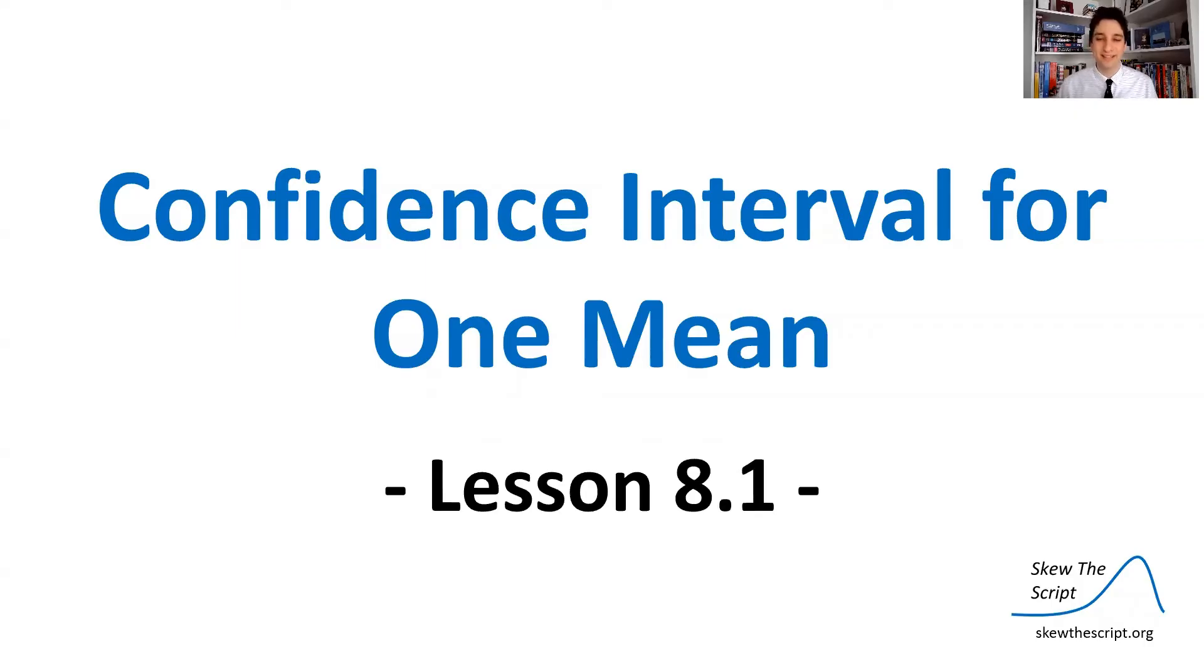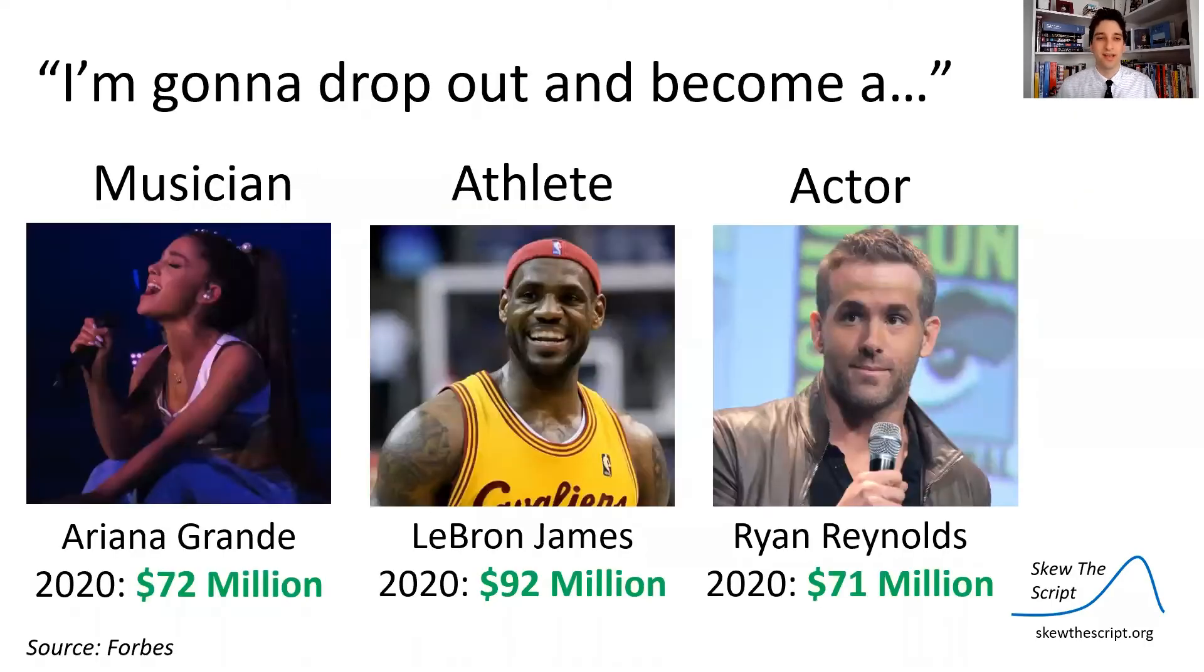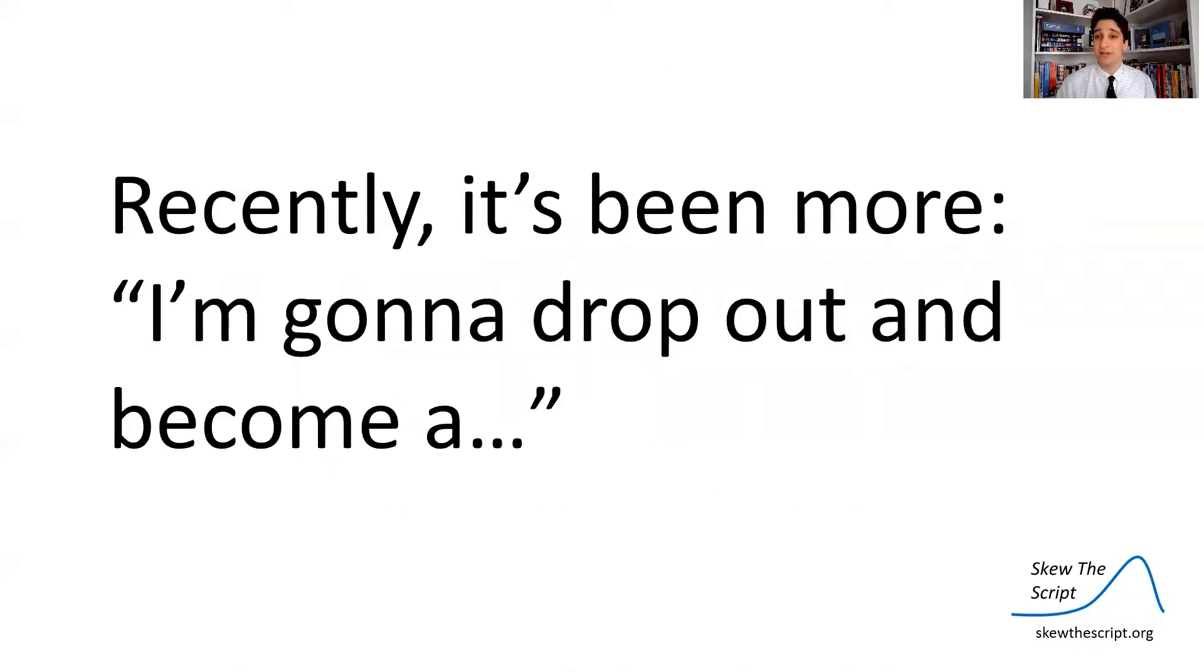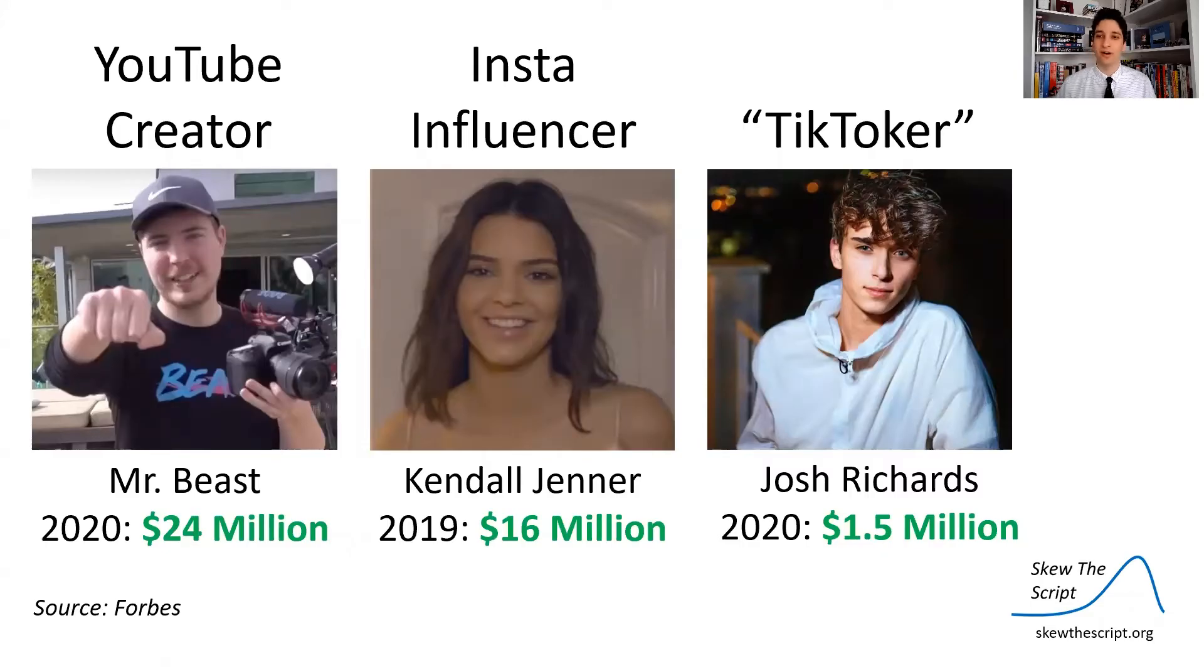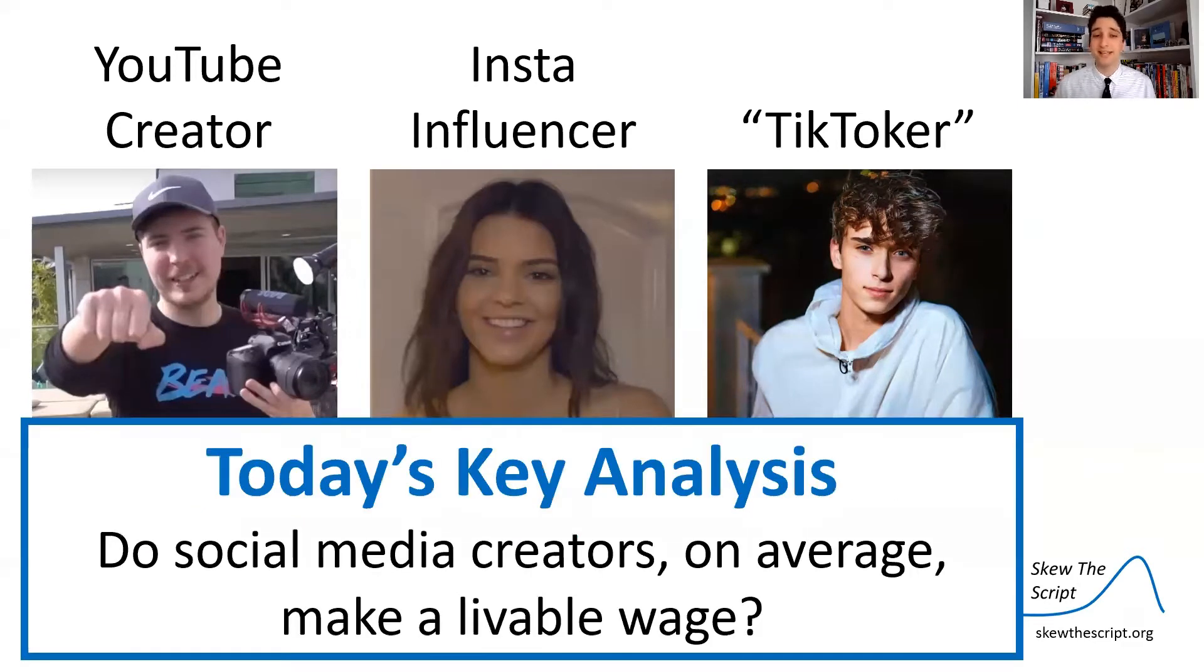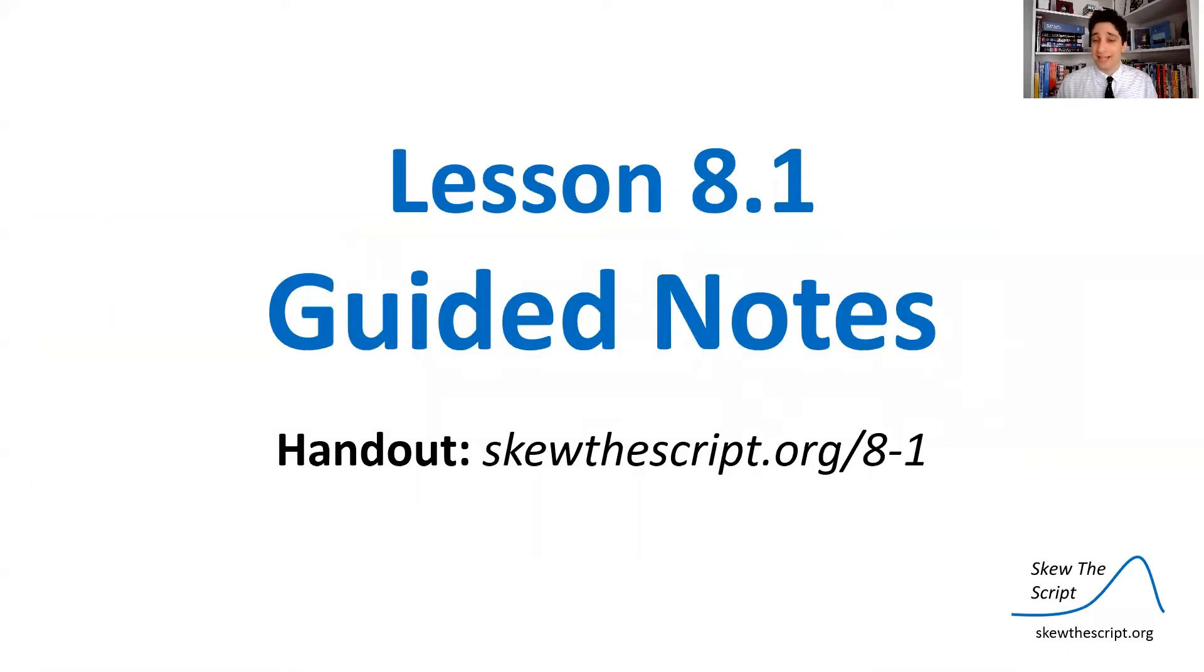Today's lesson is on the confidence interval for one mean. This is lesson 8.1 in our course sequence. So it used to be that when students would threaten to drop out of school they would say I'm gonna become a musician, an athlete, or an actor and aspire to have the crazy salaries that a lot of these entertainers make. But more recently it's been I'm going to drop out and become a YouTube creator or Instagram influencer or a TikToker. Because some of those celebrities end up making a lot of money just from their work on social media. And then if you add on other work and advertisement deals, they make a lot more. But these salaries I'm displaying here are just from social media alone. So today's key analysis is: do social media creators on average make a livable wage? This is lesson 8.1 if you want to follow along using guided notes, you can print them up at this URL.